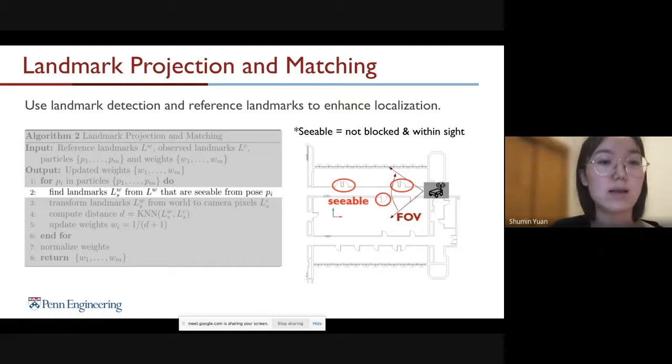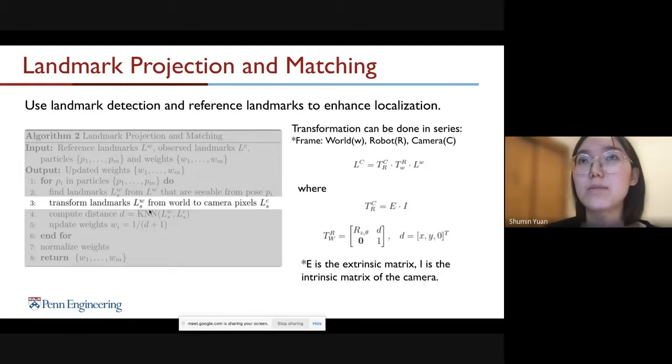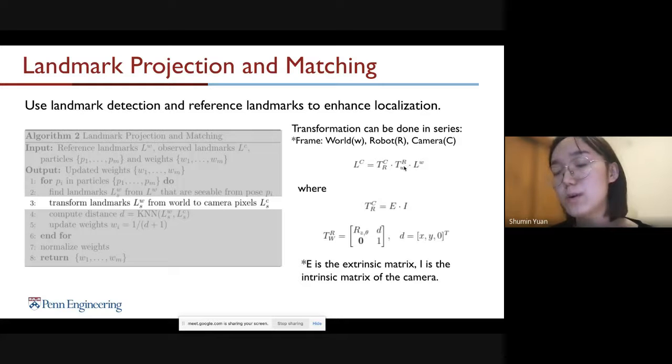The next step would be to transform those landmarks from the world coordinates to the camera pixel so we can compare those two sets of landmarks. The transformation can be done in series from world to robot using particle pose, and then from robot to camera using camera extrinsic and intrinsic matrices.